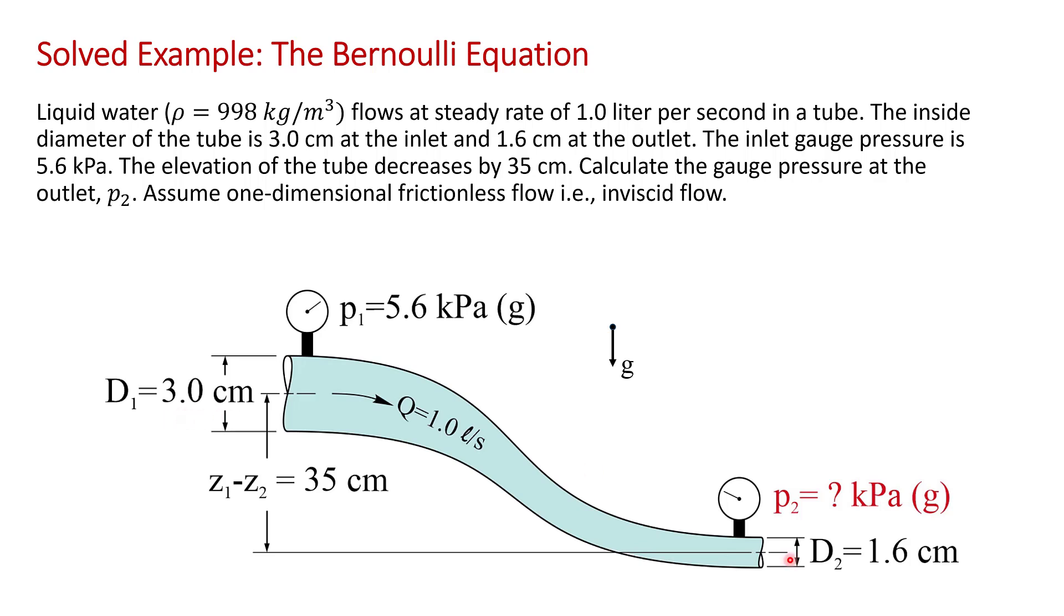and 1.6 centimeters at the outlet. The gauge pressure at the inlet is 5.6 kilopascals, and the elevation of the tube decreases by 35 centimeters from the inlet to the outlet.